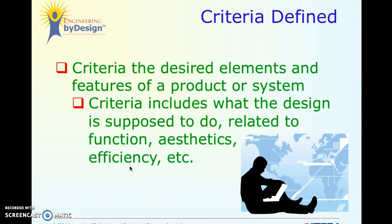Criteria includes what the design is supposed to do related to function, aesthetics, efficiency, and so on — anything it is supposed to have. For example, in your spaghetti marshmallow towers, it was required that the marshmallow was on top of the tower, that you build the tallest tower, and that you cannot tape it to the table — although I did change that criteria later on. Those are your requirements: what it must have and what it must do.